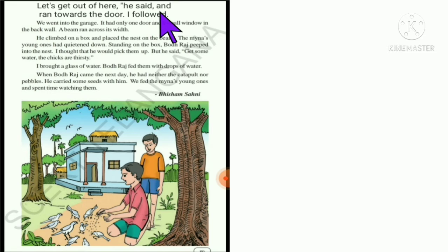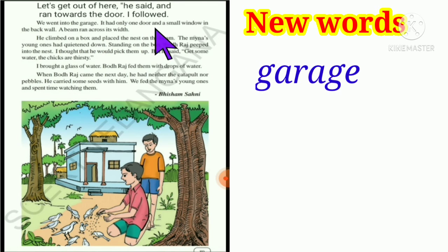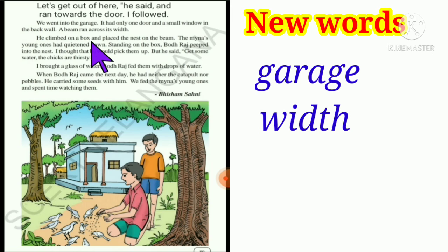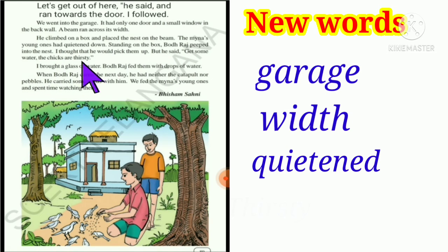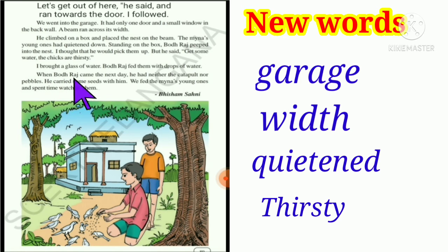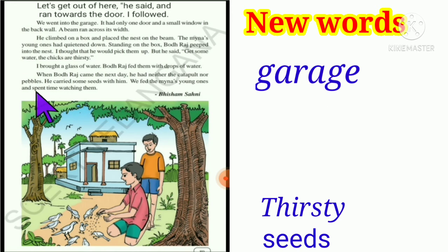'Let's get out of here,' he said and ran towards the door. I followed. We went into the garage. It had only one door and a small window in the back wall. A beam ran across its width. He climbed on a box and placed the nest on the beam. The minas young ones had quietened down. Standing on the box, Bodhraj peeped into the nest. I thought that he would pick them up. But he said, 'Get some water. The chicks are thirsty.' I brought a glass of water. Bodhraj fed them with drops of water. When Bodhraj came the next day, he had neither the catapult nor pebbles. He carried some seeds with him. We fed the minas young ones and spent time watching them.